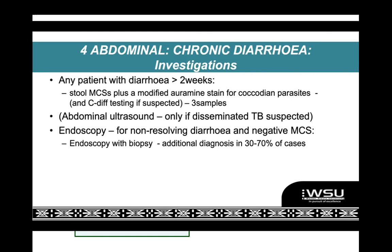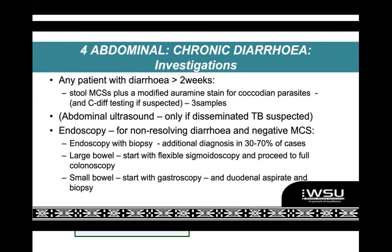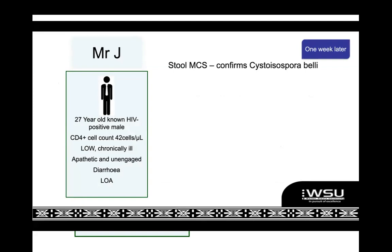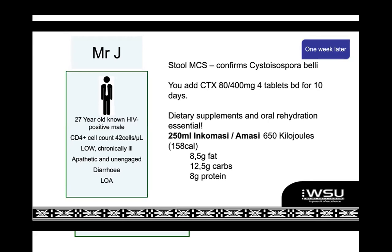There are things you won't find unless you biopsy — CMV of the gut, Kaposi of the gut, or unusual colitis. For large bowel diarrhea, you want flexible sigmoidoscopy going to full colonoscopy. For small bowel diarrhea, you go the top way — gastroscopy and duodenal aspirate. We did a stool MCS on Mr. J and it came back as Cystoisospora belli. For that, we treat with Bactrim four tablets twice a day for 10 days — a bit less than the PJP dose. It usually works very well, though sometimes you get resistant isospora, and there's a lovely section on that in the guidelines.